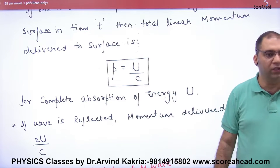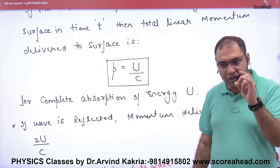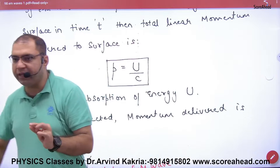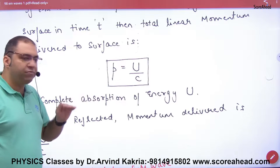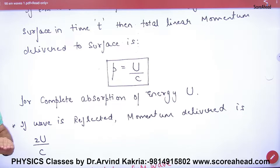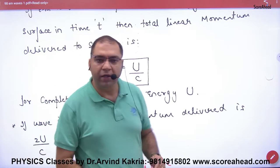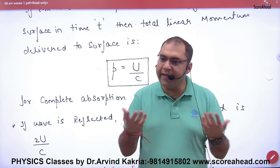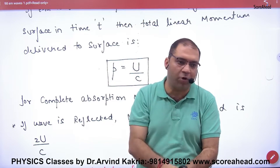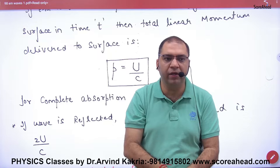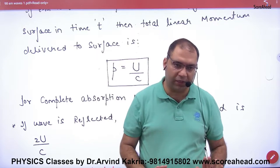The formula is P = U/C. For complete absorption of energy U, when all light photons are absorbed, the momentum transferred is U/C.